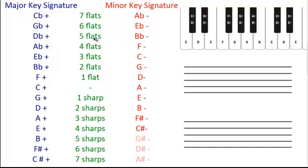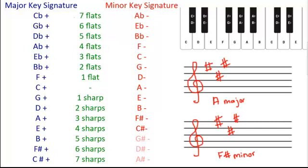C-flat major is the relative major of A-flat minor, and A-flat minor is the relative minor of C-flat major, as they both have seven flats. G-flat major would be paired with E-flat minor, D-flat with B-flat minor, and so forth going down the list. As you can see, we have A major and F-sharp minor — both of those have three sharps: F-sharp, C-sharp, and G-sharp. They are the same key signatures, although one is a major key signature and one is a minor, so they are relatives.